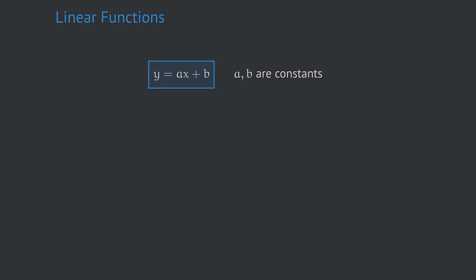The reason why it is called a linear function is that the graph of a linear function always is a straight line. The exact position of that straight line within the coordinate system is determined by the constants a and b.